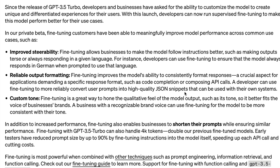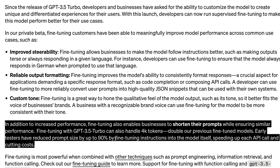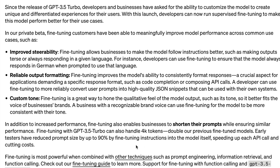One use case you might not think about is that fine-tuning can allow you to reduce your input prompt size in the future, thereby reducing cost. OpenAI says early testers managed to reduce prompt size by up to 90% by fine-tuning instructions into the model itself, which speeds up each API call and cuts costs. Without fine-tuning, you might rely on few-shot prompting, chain of thought, or tree of thought — but fine-tuning can reduce prompt size by 90%, resulting in faster API calls and lower costs since OpenAI charges based on input and output tokens.